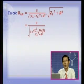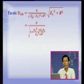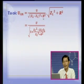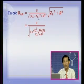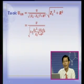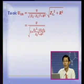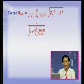Trước tiên, điện áp hiệu dụng trên đoạn mạch AN chính bằng cường độ dòng điện nhân cho tổng trở của đoạn mạch AN. Đoạn mạch AN gồm cuộn dây thuần cảm và biến trở R, cho nên tổng trở đoạn mạch AN bằng √(ZL² + R²). Còn I bằng U hiệu dụng cả mạch chia tổng trở cả mạch, trong đó đoạn mạch gồm L, C và R nên tổng trở bằng √((ZL - ZC)² + R²).